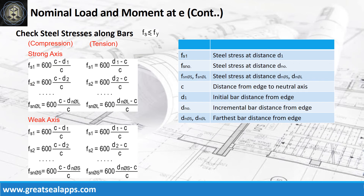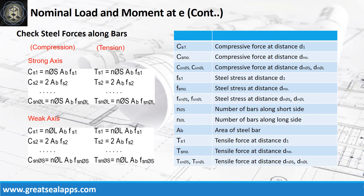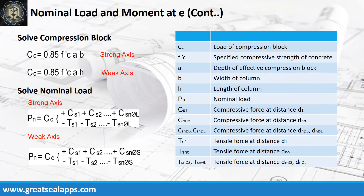Get the stress of each bar layout relative to the distance from the neutral axis, and get their forces with their corresponding force type. Solve the force of the compression block and sum up all the forces together with the compression block to get the actual nominal load of the column section.